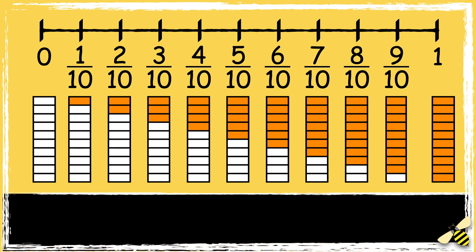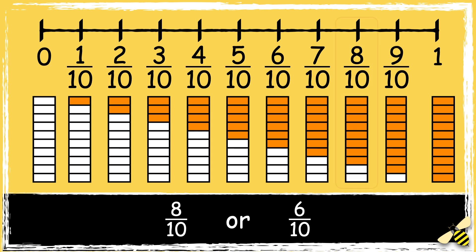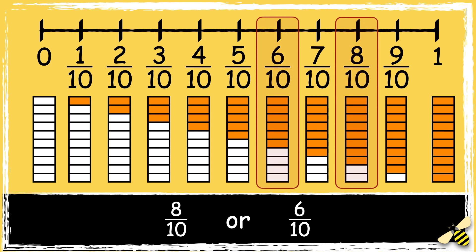So now we can use this number line to help us compare the fractions. Which fraction is greater, 8 tenths or 6 tenths? We can see that 8 tenths comes after 6 tenths on the number line. So 8 tenths is greater than 6 tenths.